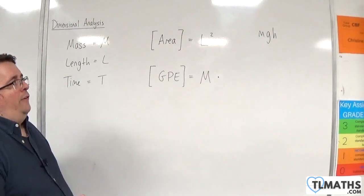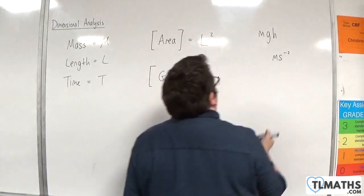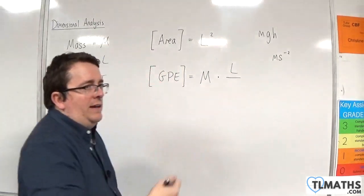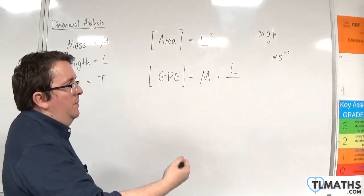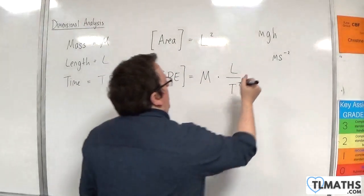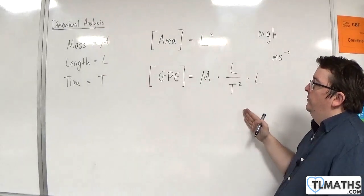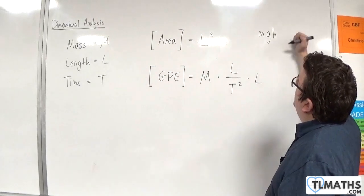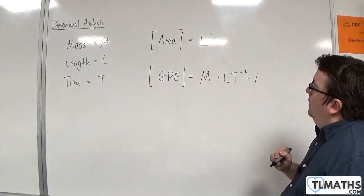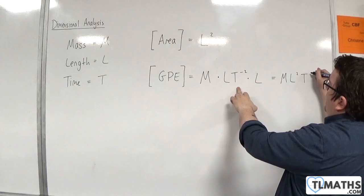Think about the units. The units for acceleration are meters per second per second. Now, meters is a length, and per second per second is time to the minus 2, so over T squared. And then the h is a length. So we would have M times L over T squared times L, and there's nothing stopping you from writing this as L T to the minus 2. We can write this as M times L squared T to the minus 2.